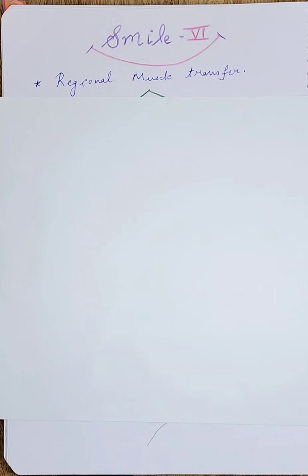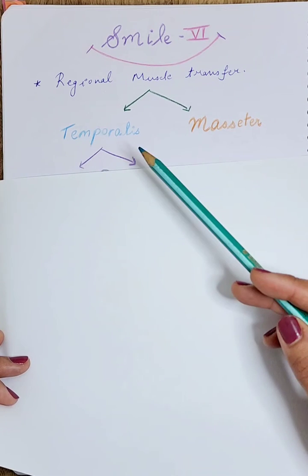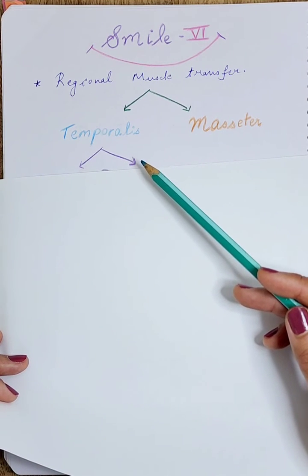We have discussed free functional muscle transfer in detail, but what happens when free flap is not possible? We have a few options for regional muscle transfer. The popular muscles are the masseter muscle - just like the nerve to the masseter was popular, the masseter muscle itself is popular for smile reanimation. However, the temporalis muscle also takes first place.